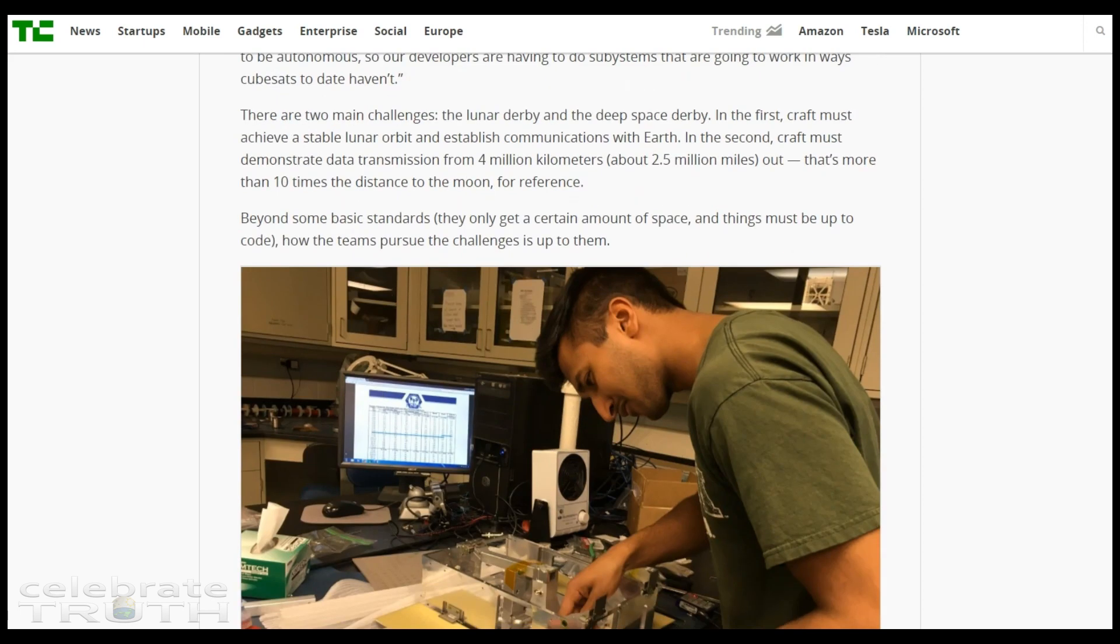And here was one of the craziest ones that I had to find. There are two main challenges: the Lunar Derby and the Deep Space Derby. In the first, craft must achieve a stable lunar orbit and establish communications with Earth. In the second, craft must demonstrate data transmissions from 4 million kilometers, about 2.5 million miles out. That's more than 10 times the distance to the moon. We're told that the moon is 240,000 miles away. This hobbyist competition to send CubeSats out must go out to 2.5 million miles. Who are they trying to kid?